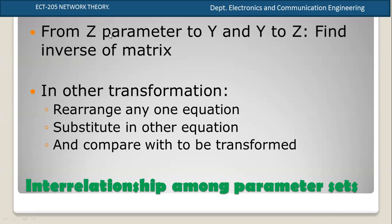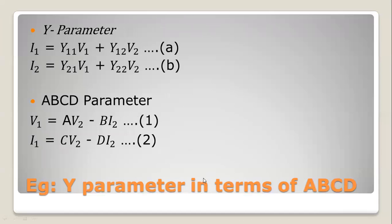The Z parameter is expressed in terms of A, B, C, D. The Z equals a function of A, B, C, D. Let me see — if we see Z equal to Z, this is the Y-parameter in terms of ABCD, giving Y11, Y12, Y21, Y22.